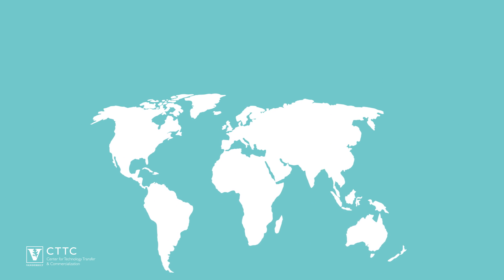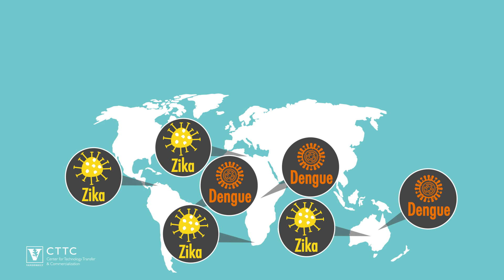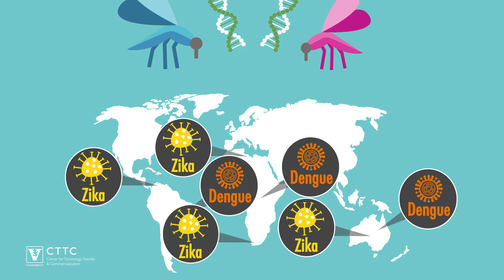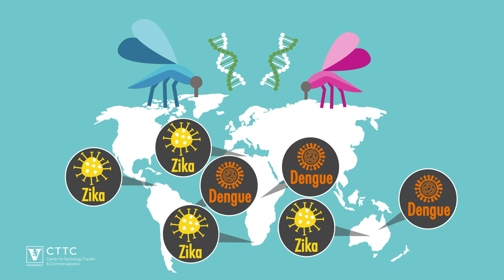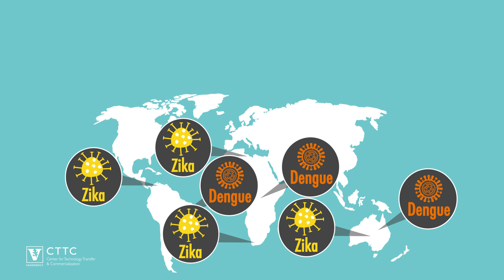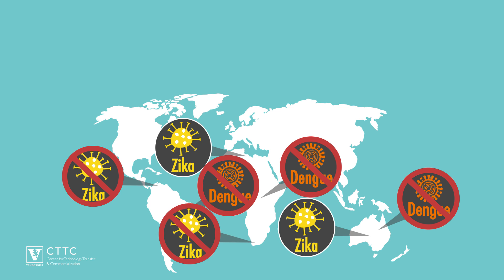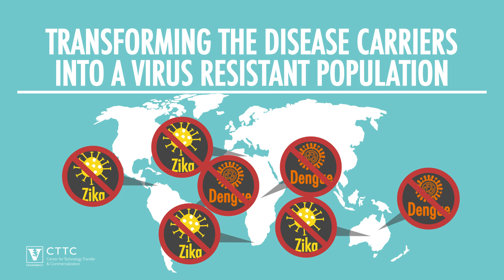The second approach exploits Wolbachia's mysterious ability to suppress dengue and Zika viruses. The strategy is to release both male and female mosquitoes carrying a strain of Wolbachia with added CI genes that would spread more rapidly through mosquitoes in areas where these diseases are endemic, transforming the disease carriers into a stable, virus-resistant population and significantly reducing disease transmission.